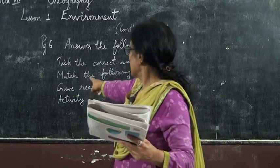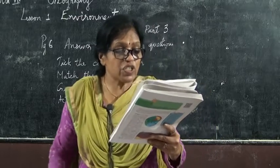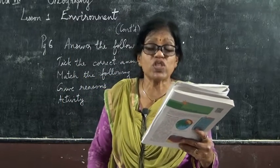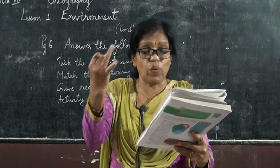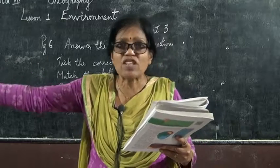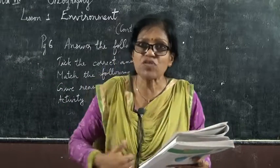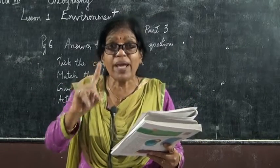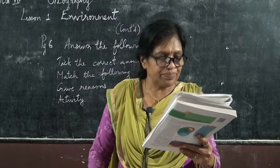Now pick the correct answer. The first one: which is not a natural ecosystem? Desert, aquarium, or forest? Forest is natural. Desert is also natural. Which is not natural? Human-made aquarium — so that is not natural.